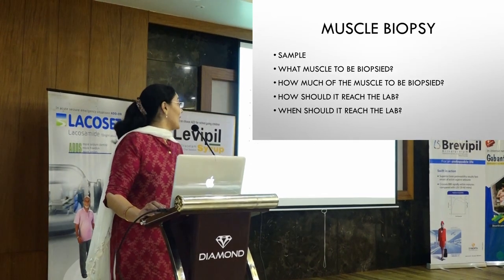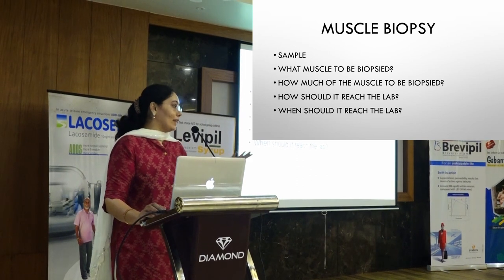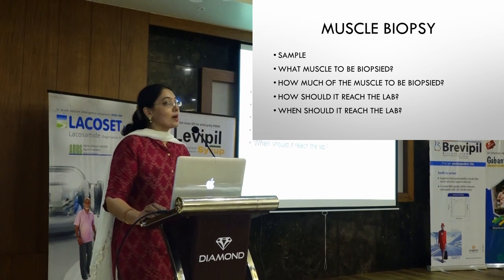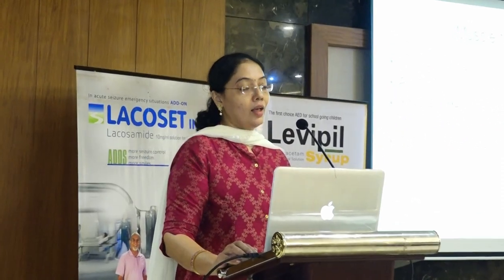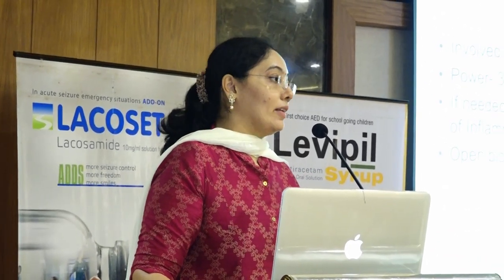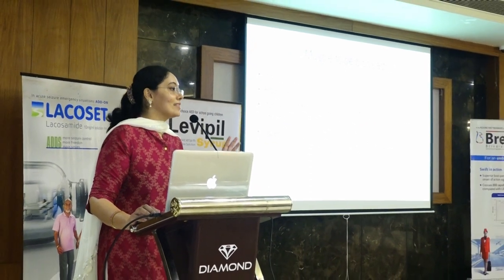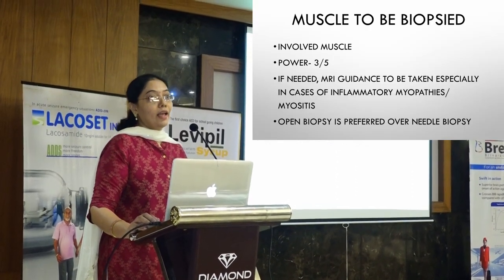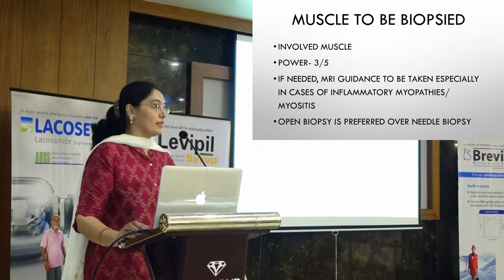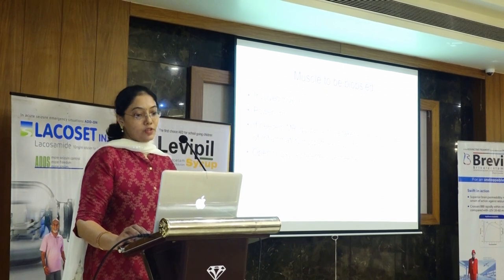The first thing that we would want is a good sample. Let us see what muscle is to be biopsied — at least for us to give you a definitive diagnosis, how much of the muscle is required, how should it reach and by when it should reach the lab. First, it has to be the involved muscle. If it is not the involved muscle, you would see our reports as 'no diagnostic pathology.' The power has to be at least 3, or 4 minus at the max — not 4 plus and 5, or nothing less than 3. If needed, MRI guidance is to be taken.